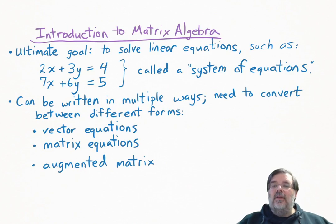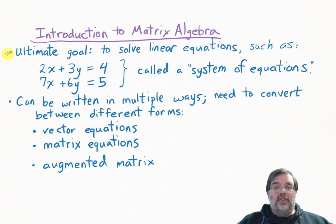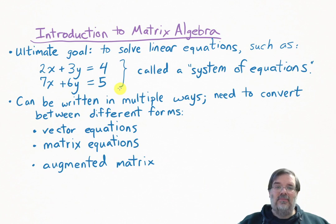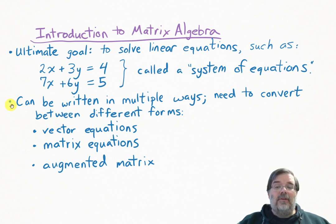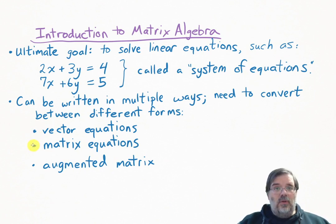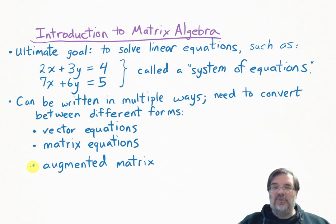Hello everybody. This video is an introduction to matrix algebra. Our ultimate goal is going to be to solve linear equations, such as these two equations right here: 2x plus 3y equals 4, and 7x plus 6y equals 5. Written in this format, it's called a system of equations. The primary goal of this first video is to learn how to convert between different forms of sets of linear equations: converting a system of equations to vector equations, to a matrix equation, and then an even more compact form called an augmented matrix. This is what we're going to learn.